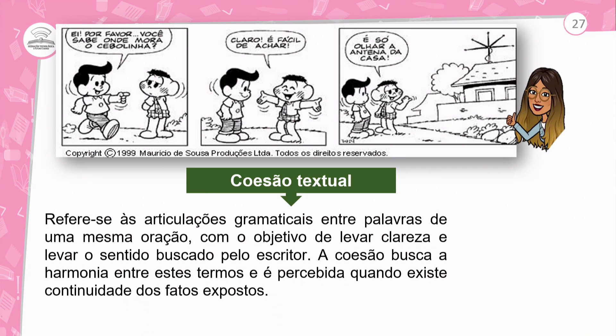Coesão textual refere-se às articulações gramaticais entre palavras de uma mesma oração com o objetivo de levar clareza e o sentido buscado pelo escritor. A coesão busca harmonia entre estes termos e é percebida quando existe continuidade dos fatos expostos. Vocês devem ter um cuidado na hora de fazer o uso dos elementos coesivos, principalmente das conjunções, porque conforme a conjunção que você utilizar, você tem que perceber qual é a ideia que você quer transmitir. Você não vai pegar uma conjunção de ligação para dar a ideia de oposição.